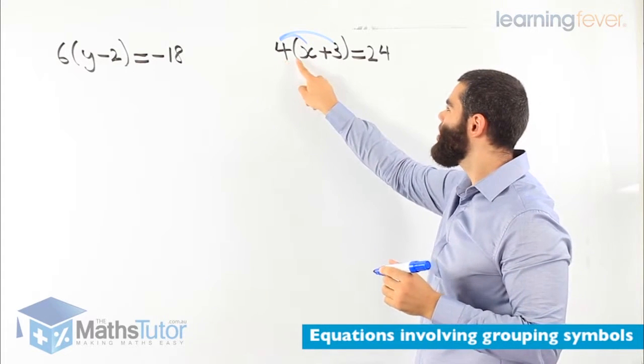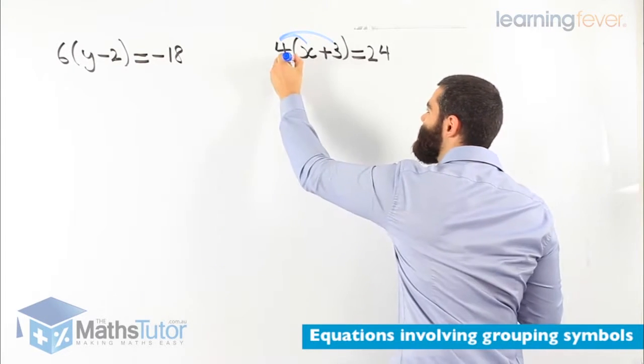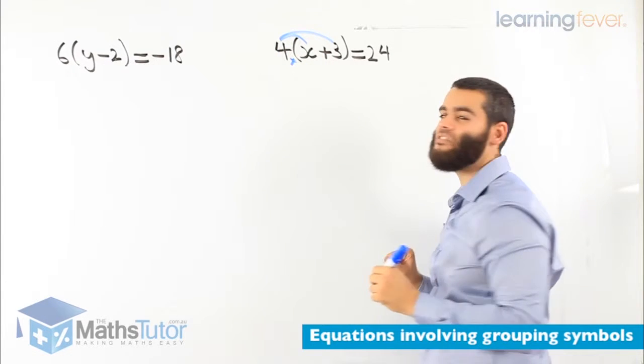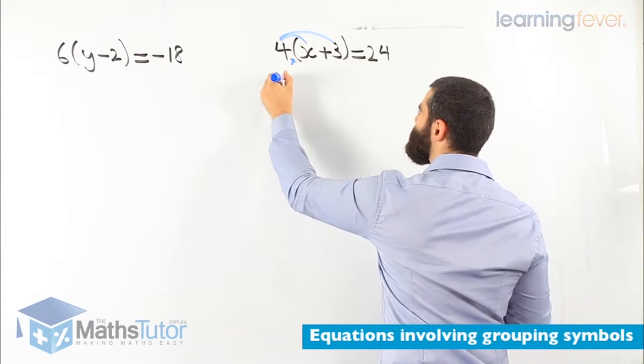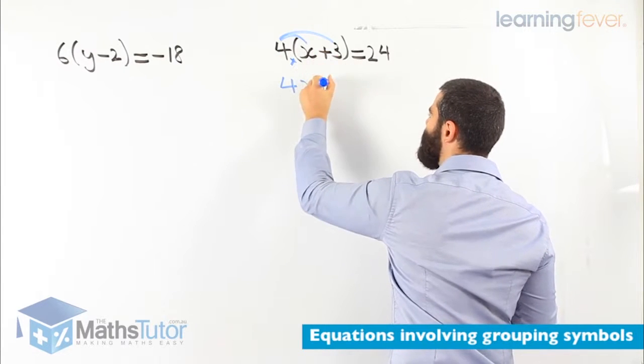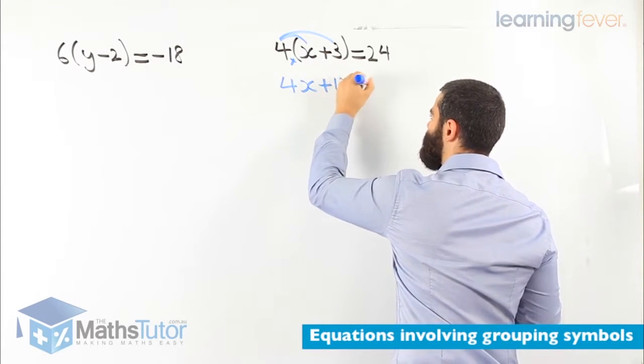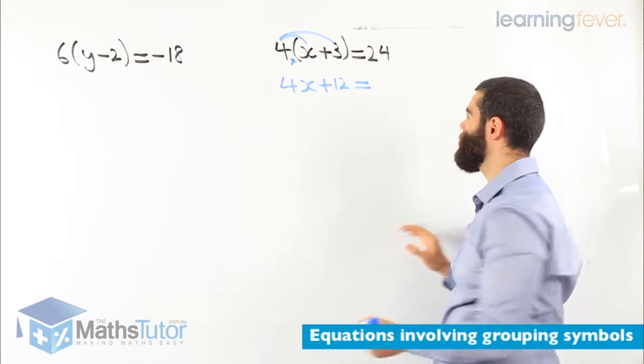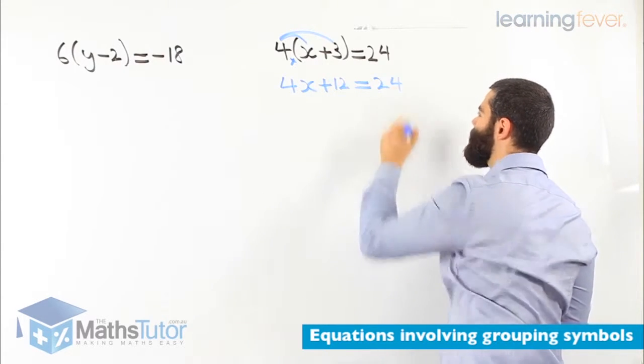We know between the 4 and the bracket is an invisible multiplication sign. So 4 times x, 4 times 3 is 12, equals to 24.